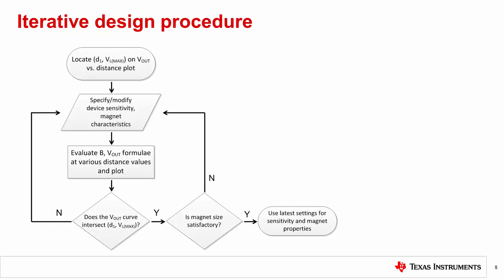We'll now discuss an iterative design procedure that simplifies sensor and magnet selection for proximity sensing applications as described on slide 2. The DRV5056 is recommended for best performance. The goals are to prevent sensor saturation and maximize SNR for the given sensor and magnet specifications by mapping D1 to VL max, the upper limit of the sensor output range.